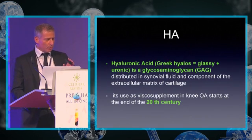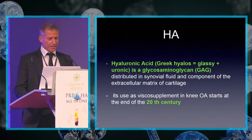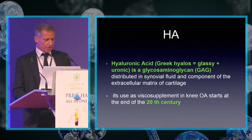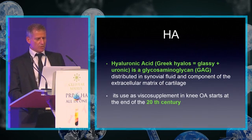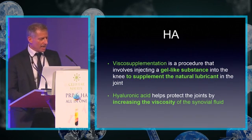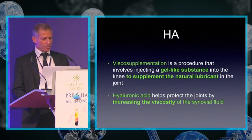Hyaluronic acid — from the Greek 'yalos,' meaning glassy, and uronate — is a glycosaminoglycan distributed in the synovial fluid and is a component of the extracellular matrix of cartilage. Its use as a visco-supplement in knee osteoarthritis started at the end of the 20th century. Viscosupplementation involves injecting a gel-like substance into the knee to supplement the natural lubricant in the joint, increasing the viscosity of the synovial fluid.